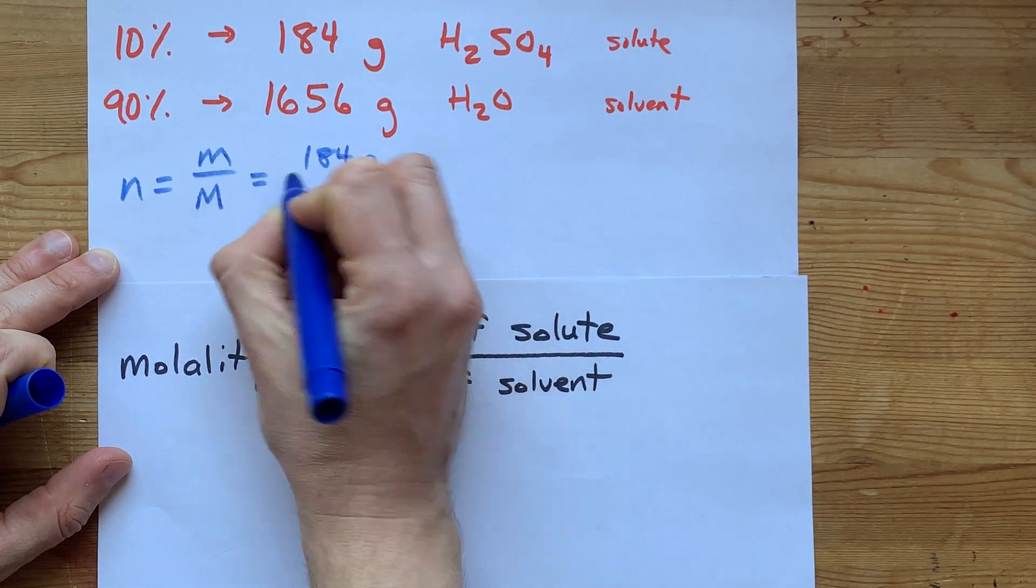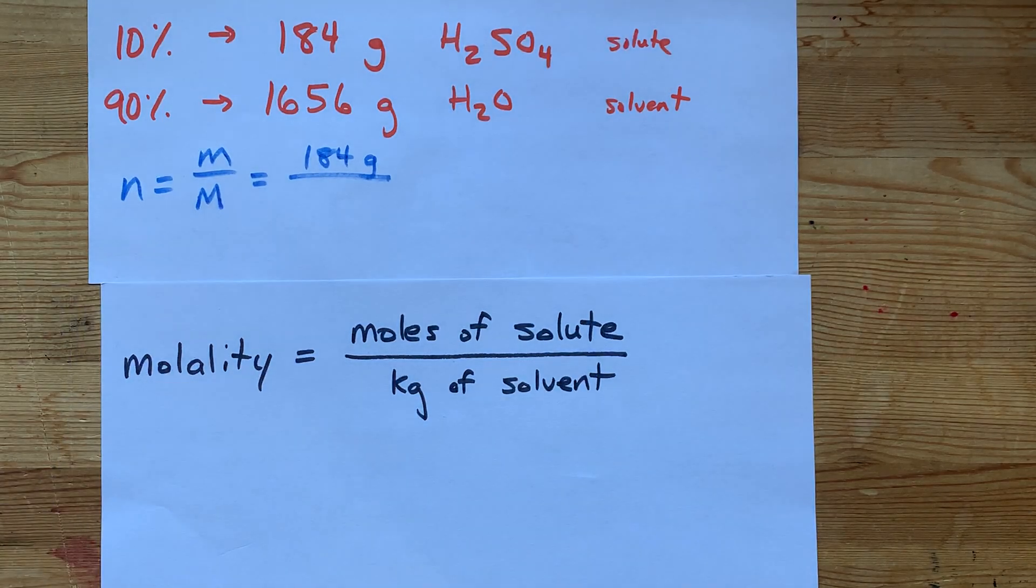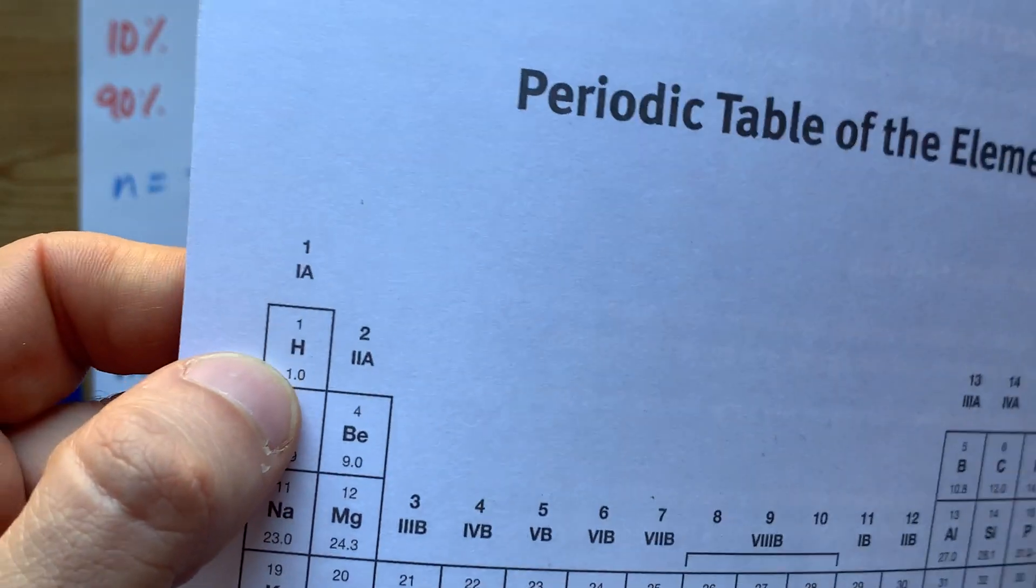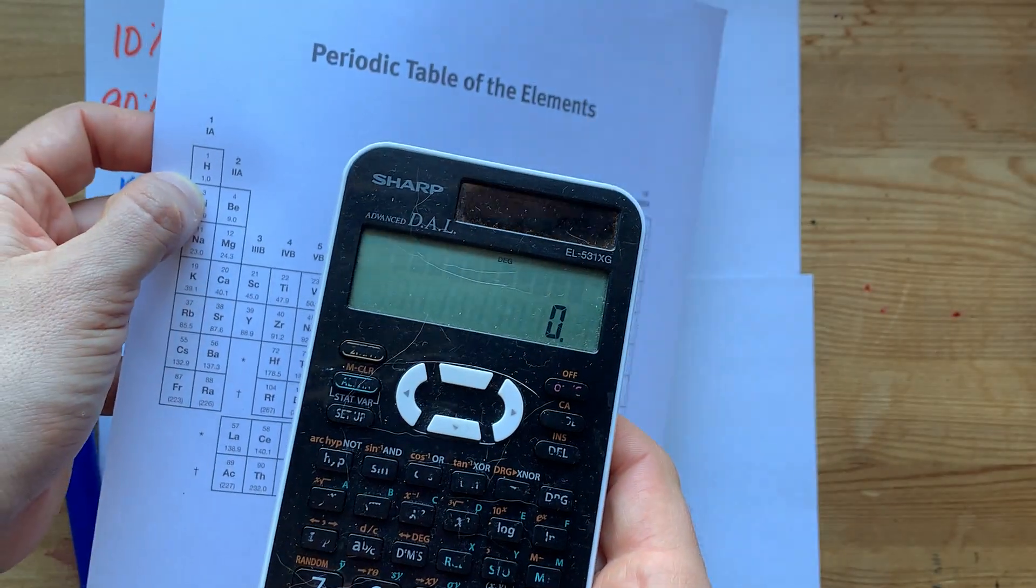184 grams divided by, what's the molar mass of H2SO4? Well, you might have to add up the molar masses of the elements that make it.